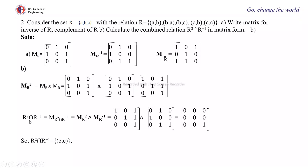For intersection of two relation matrices, check corresponding elements: write 1 only if both positions have 1, otherwise write 0. For union, if any one position has a 1, write 1. So intersection requires both to be 1, while union requires at least one to be 1.